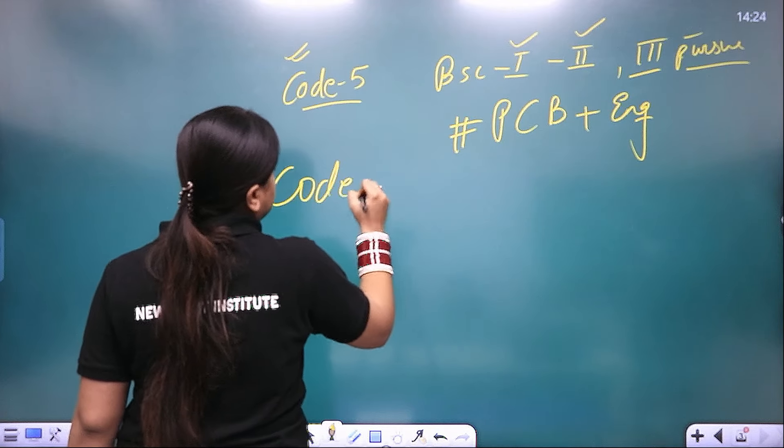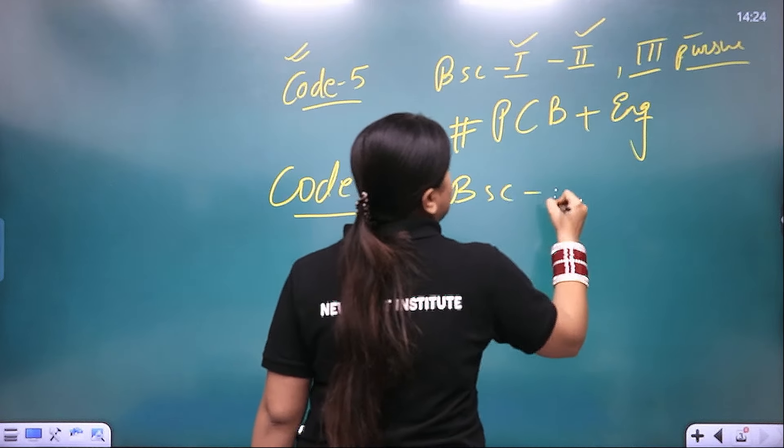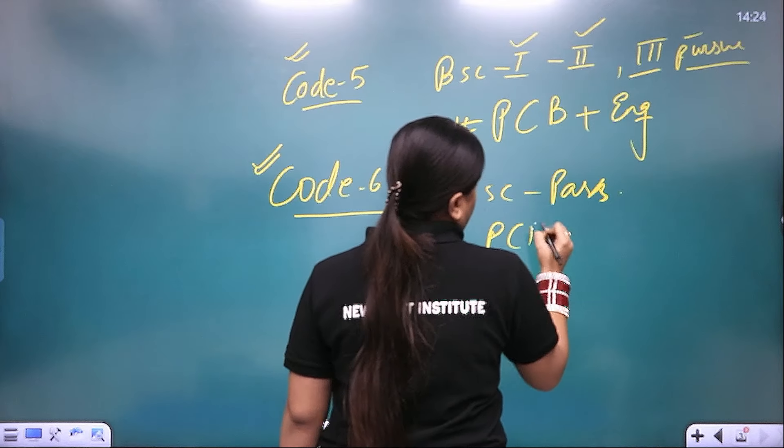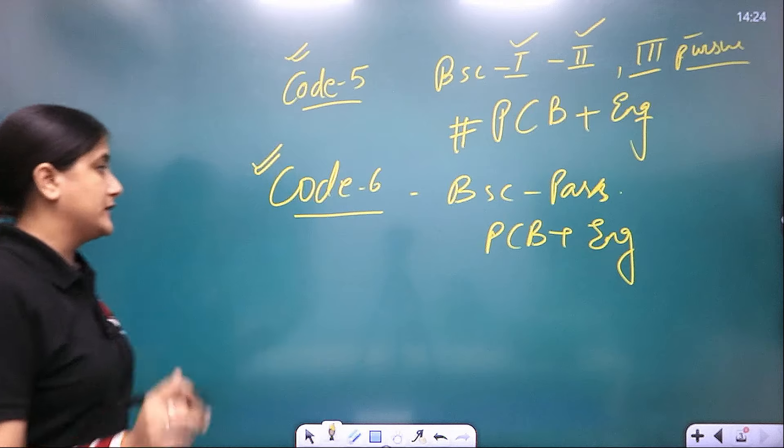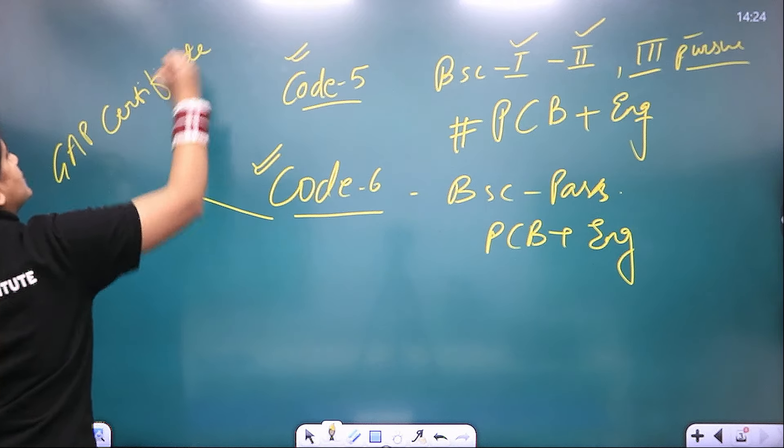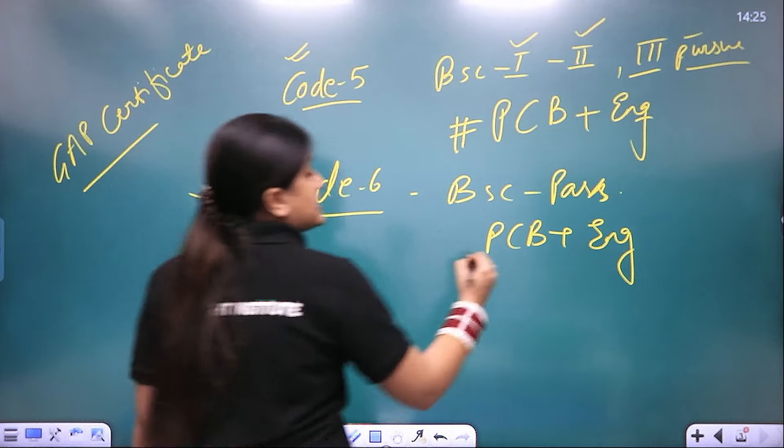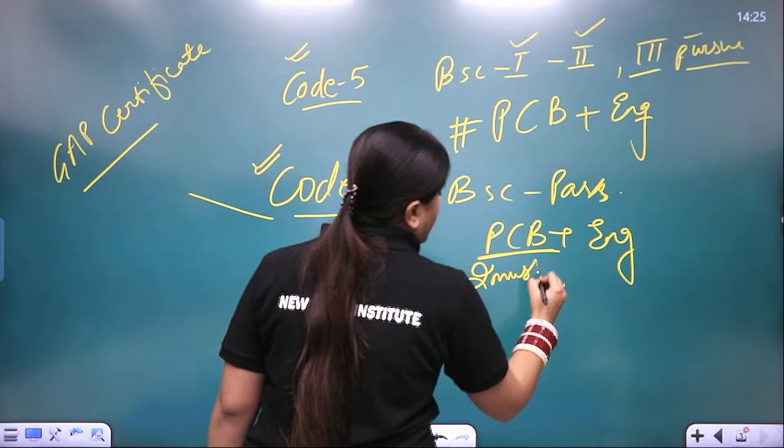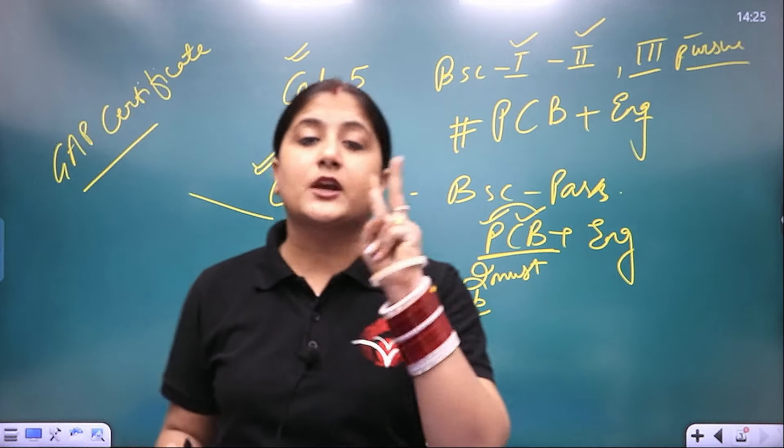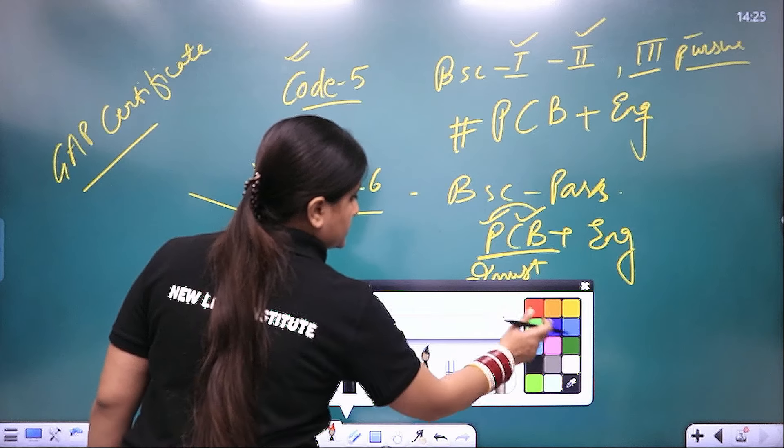If I talk about code 6, students who have BSC completed in very simple words, if you have BSC passed with PCB plus English, then you will use code 6 with PCB plus English. And now students, GAP certificate is needed at the time of counseling. Now let's talk about one thing. You will know that two subjects must be in PCB, two subjects are must. Either it is physics and chemistry or physics and biology. In PCB, there are two subjects mandatory for you.